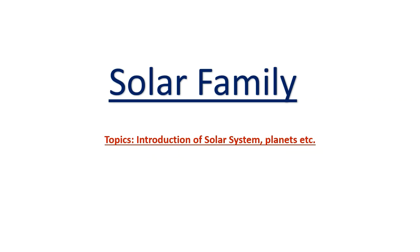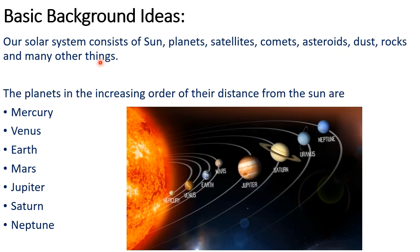Let's discuss some basic background ideas of our solar system. Our solar system mainly consists of the Sun, planets, satellites, comets, asteroids, rocks, and many other small things. The planets in our solar system, in the increasing order of their distance from the Sun, are as follows.